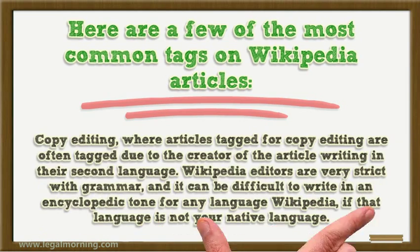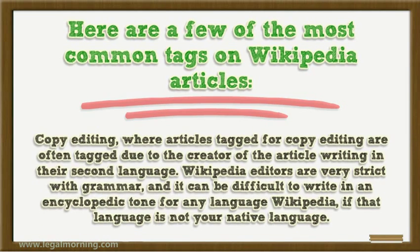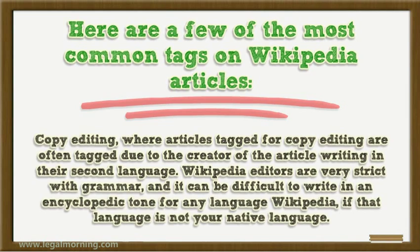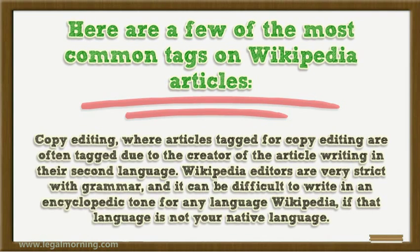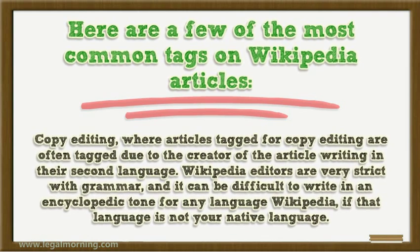Copy editing: articles tagged for copy editing are often tagged due to the creator of the article writing in their second language. Wikipedia editors are very strict with grammar, and it can be difficult to write in an encyclopedic tone for any language on Wikipedia if that language is not your native language.